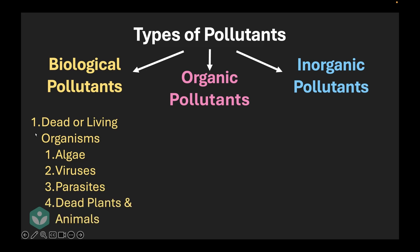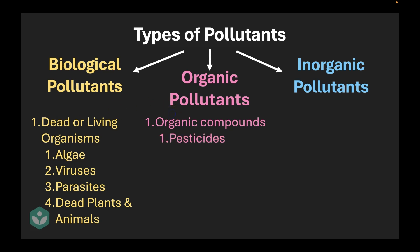Organic pollutants are organic compounds that are made of elements like hydrogen, carbon, oxygen, nitrogen and these are found in pesticides and fertilizers.